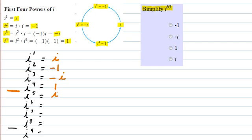So i to the fifth should be i, i to the sixth power should be negative 1, i to the seventh power should be negative i, and then finally i to the eighth is 1. And then the pattern begins again. I to the ninth should be back to i.